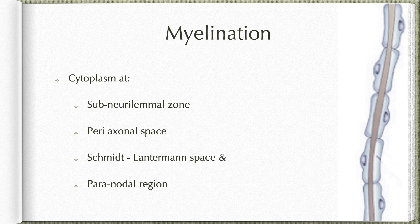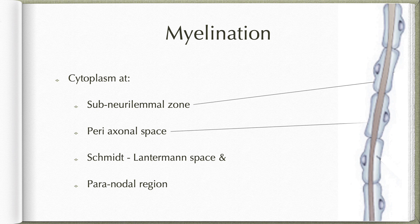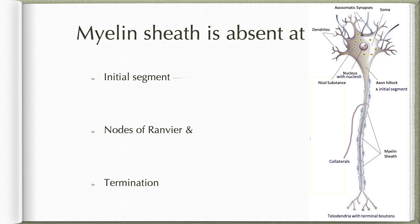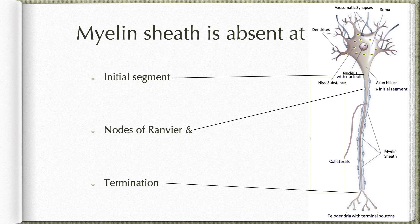With myelination, the cytoplasm of the oligodendrocyte or Schwann cell is squeezed out, so what is left in the myelin is the adjacent layers of cell membranes only. But at certain places cytoplasm is still visible, like the subneural lemmal zone, periaxonal space, Schmidt-Lantermann spaces — which are gaps between adjacent cell membranes allowing for material transportation — and the paranodal region immediately adjacent to nodes of Ranvier. The myelin sheath is absent in the initial segment, at the nodes of Ranvier, and at the termination of the axon.